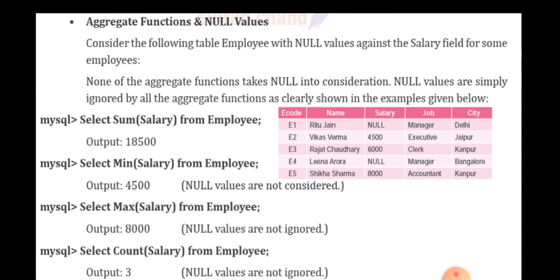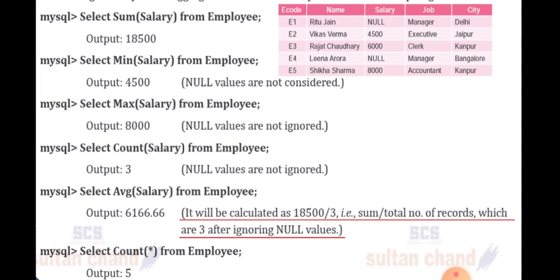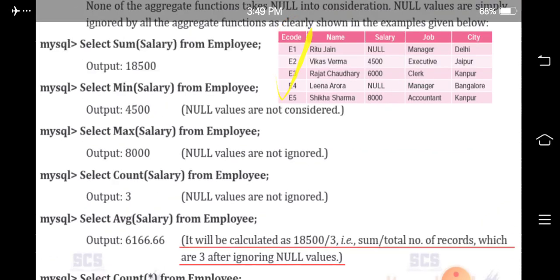The sum of salary, the compiler will avoid null values. Min of salary, again the null values are avoided, not considered. Max of salary, it avoids or ignores the null values. Min of salary also. Count of salary we will get only 3, because even though 5 employees are there, 3 employees are getting the salary. Other 2 having only null values. So the compiler automatically ignores null value. The average, it will be calculated as 18500 divided by 3 only, the sum divided by total number of records which are 3 after ignoring null values. Select COUNT(*) from Employee, then only you will get 5, because COUNT(*) always considers null values. COUNT(*) will take the first column only.